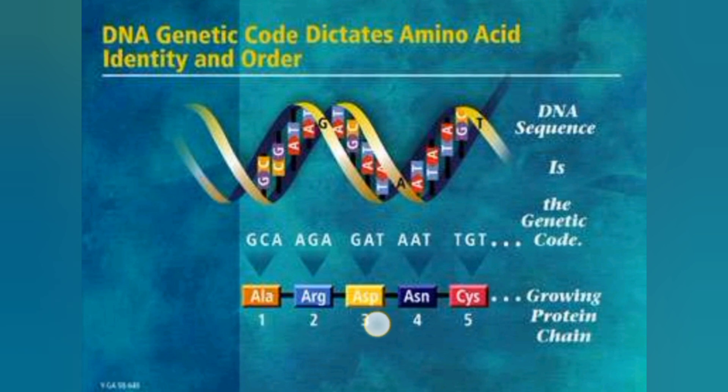These proteins are formed by DNA in the processes of translation and transcription. The DNA genetic code dictates amino acid identity and order — this is an important function of DNA that makes proteins.